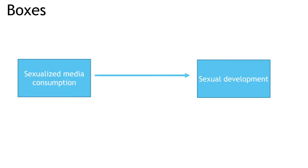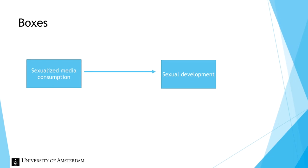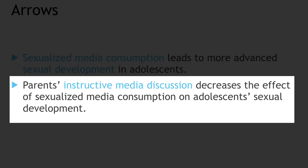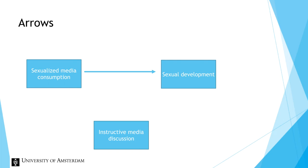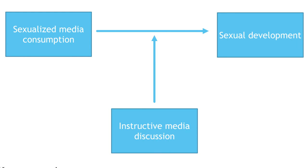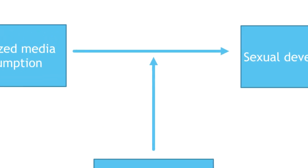The conceptual model already consisted of two boxes, and now we can put the additional variable in a box. Just like before, we can draw arrows that represent causal effects. But in the second sentence, instructive media discussion has an effect on the effect of sexualized media consumption on sexual development. Thus, we should draw an arrow pointing from instructive media discussion, the cause, to the arrow between sexualized media consumption and sexual development.